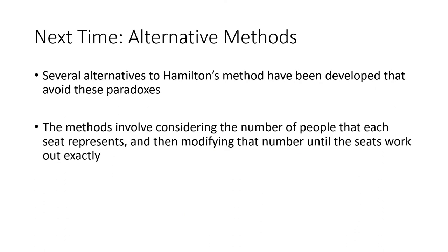Because of these weird paradoxes, several alternatives to Hamilton's method have been developed. These methods involve considering the number of people that each seat represents — looking at how many people each representative actually represents, then modifying that number until the total number of seats works out to what we want. We're going to consider those methods in the next lecture.